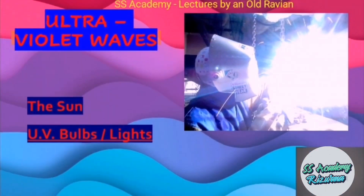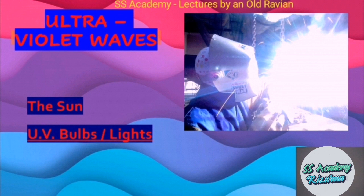Now, ultraviolet waves. Ultraviolet waves are produced by the sun, UV bulbs, or lights. They are detected by skin or flesh and by fluorescent substances. Their uses are in tanning, sun tanning, and security purposes.